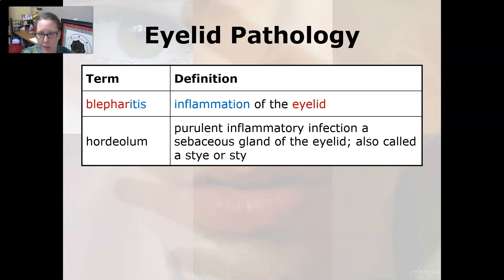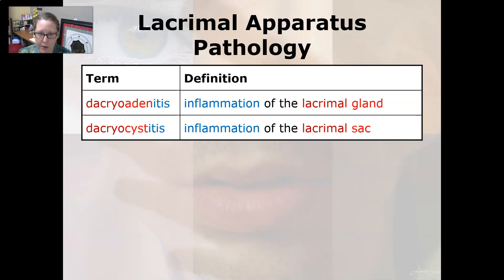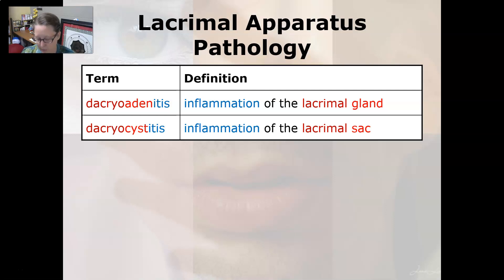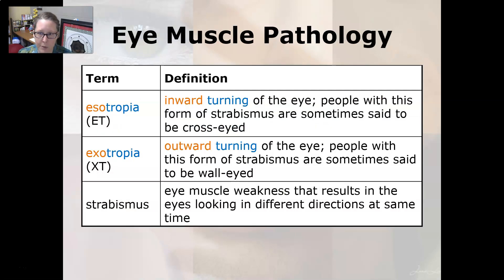Blepharitis is an inflammation of the eyelid. In eyelid pathology, hordeolum is a purulent inflammatory infection of the sebaceous gland of the eyelid, also called a sty — spelled S-T-Y-E or S-T-Y. In lacrimal apparatus pathology, dacryoadenitis is an inflammation of the lacrimal gland — 'adeno' means gland and 'dacryo' means tear. Dacryocystitis is an inflammation of the lacrimal sac.